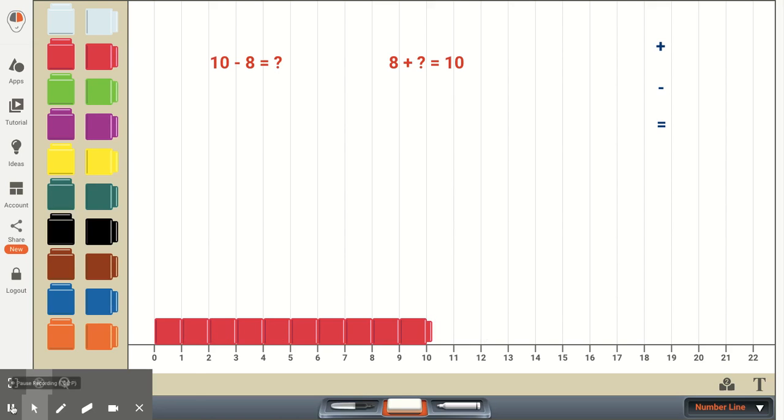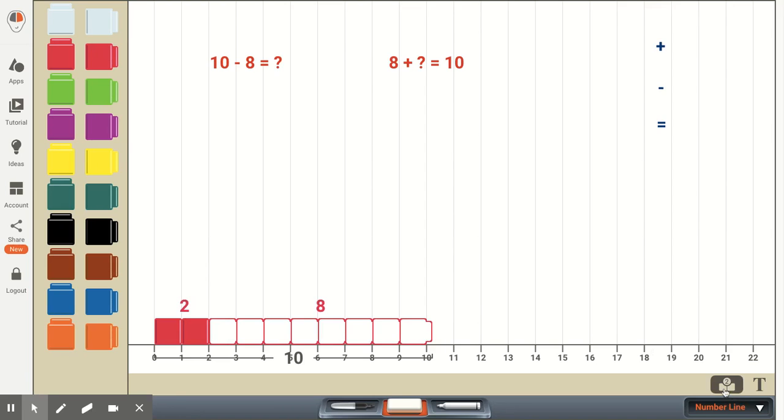This is what we're starting with. And I'm showing that we removed 8. So 10 minus 8 equals 2. Now, another way we could be saying this is we could be saying 8 plus something equals 10, because we know that 8 plus 2 equals 10.